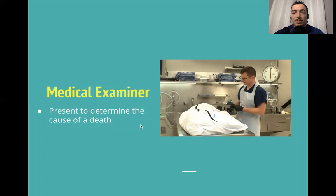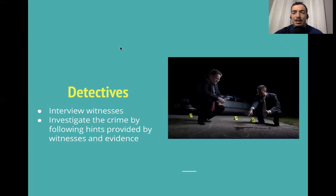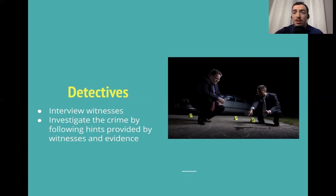The next personnel is a medical examiner. They're sometimes at the crime scene, or may be used after the crime scene has been investigated. Their job is to determine the cause of death — was there foul play? Was this an accident? A natural death? Is it a homicide or murder? Lastly, you have detectives — they're kind of like the glue. They're interviewing witnesses and investigating the crime by following hints provided by witnesses and evidence, trying to piece it all together, solve the crime, and bring justice.